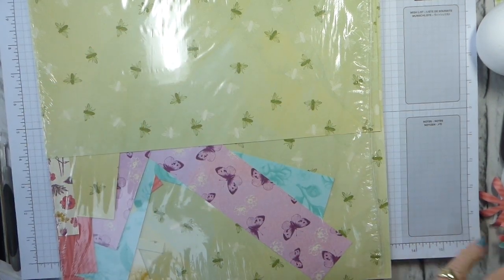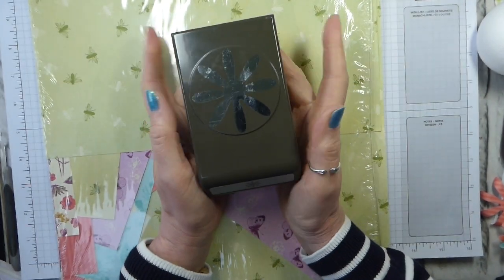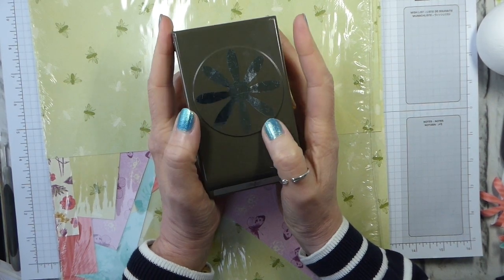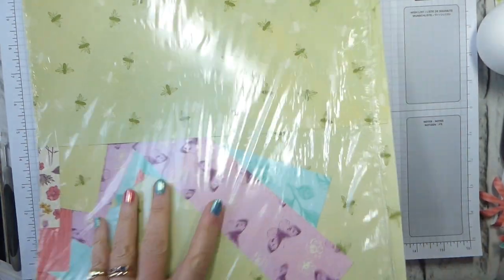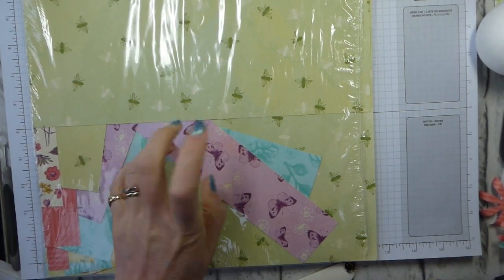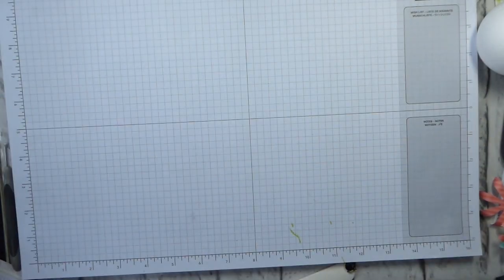I have used the daisy punch from the retiring annual catalogue. So this is in the 2018-2019 catalogue. It will be in the 1920 catalogue as well. And I'm using the Tea Room Specialty Designer Series paper. And I've just punched out loads of daisies.